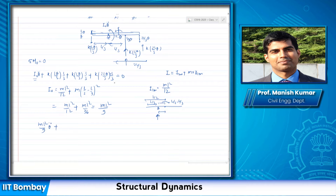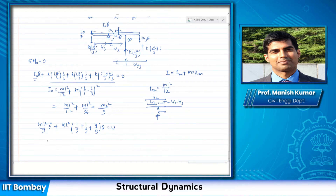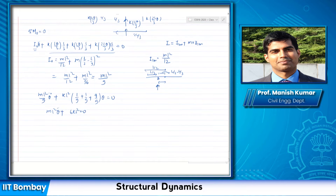Summing terms gives kl² × (1/9 + 1/9 + 4/9) × θ = 0. Cancelling the 9: ml²θ̈ + 6kl²θ = 0, which reduces to θ̈ + (6k/m)θ = 0. This is the final equation of motion.